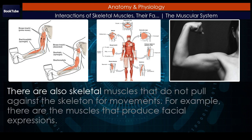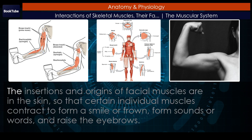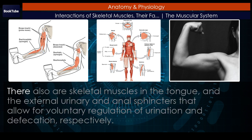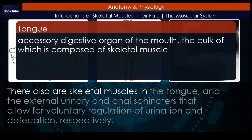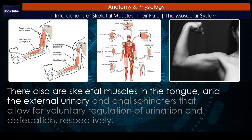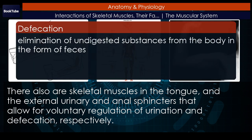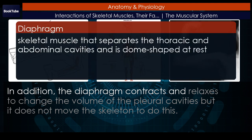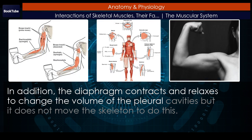There are also skeletal muscles that do not pull against the skeleton for movements. For example, there are the muscles that produce facial expressions. The insertions and origins of facial muscles are in the skin, so that certain individual muscles contract to form a smile or frown, form sounds or words, and raise the eyebrows. There are also skeletal muscles in the tongue and the external urinary and anal sphincters that allow for voluntary regulation of urination and defecation, respectively. In addition, the diaphragm contracts and relaxes to change the volume of the pleural cavities but does not move the skeleton to do this.